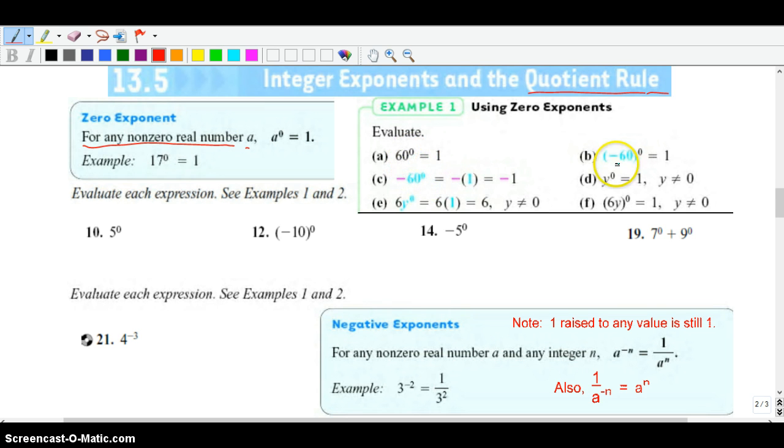60 raised to 0 is 1, negative 60 raised to 0 is also 1. Right here they have negative 60 raised to 0 is negative 1, and that's because it doesn't have the parentheses. So what's going on here is it's really negative 1 times 60 raised to the 0 power. That's the same thing as what we have right here. So really that's just a notation issue. Make sure you understand that notation.